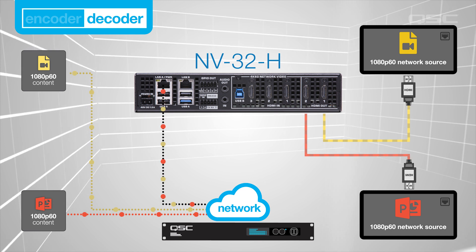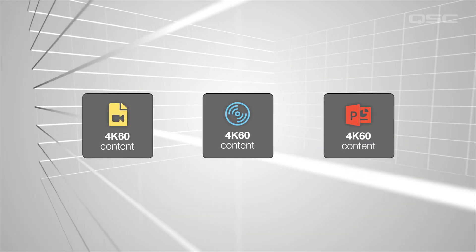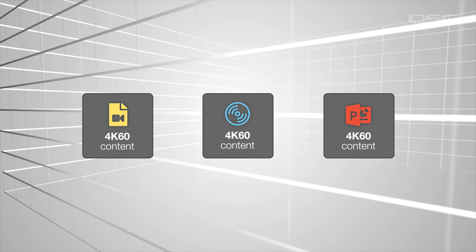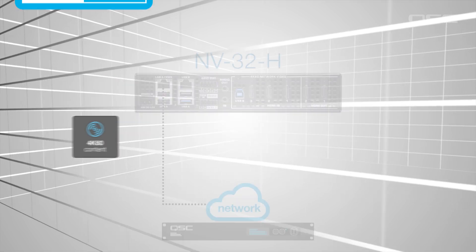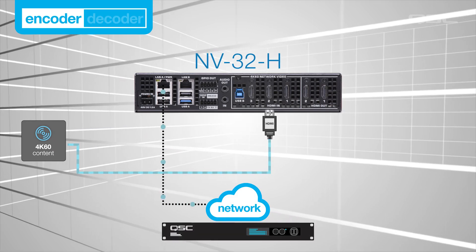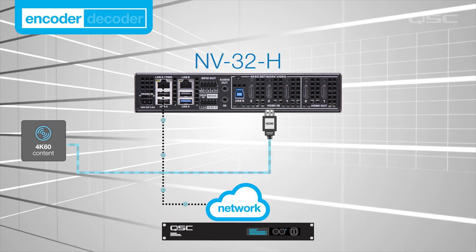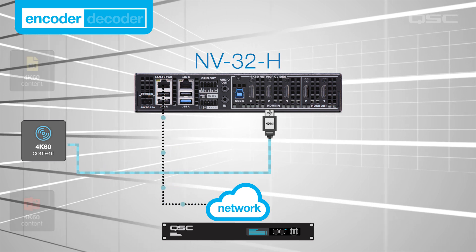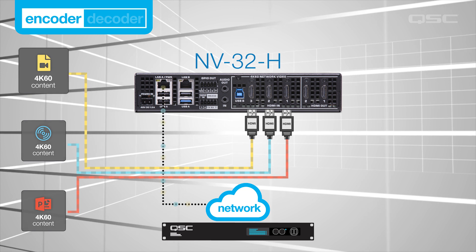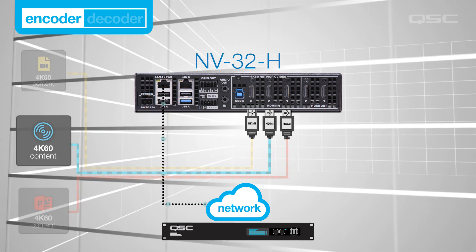However, if you're using ultra-high definition 4K content, then each encoder and decoder is limited to encoding or decoding a single 4K source at a time. That means you could still connect three 4K sources to an encoder, as long as it's only ever sending one of those streams out at a time.